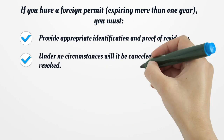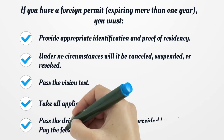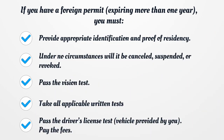If you have a foreign permit expiring in more than one year, you must: provide appropriate identification and proof of residency — under no circumstances will it be cancelled, suspended, or revoked. Pass the vision test, take all applicable written tests, pass the driver's license test with a vehicle provided by you, and pay the fees.